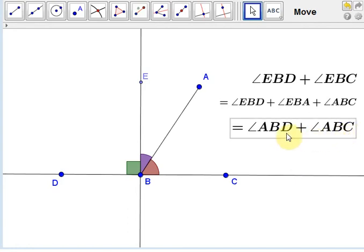Angle ABC and ABD is equal to the sum of these two right angles. Thank you very much.